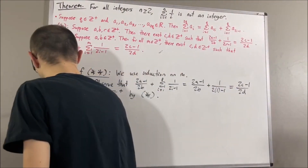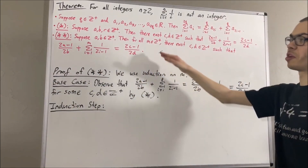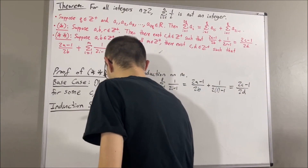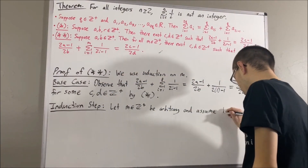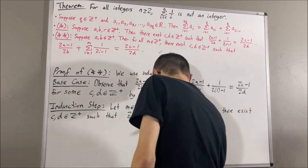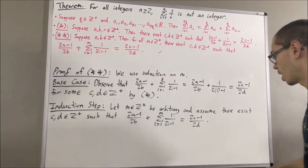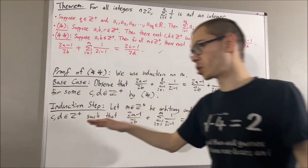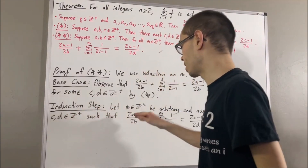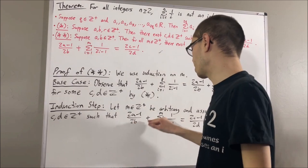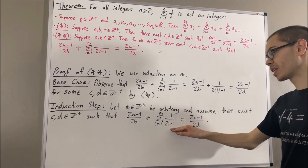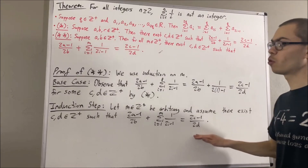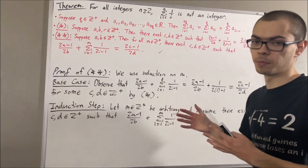Now let's move on to the induction step. We give ourselves an arbitrary positive integer m, and we assume this statement is true for that arbitrary positive integer m. The whole goal of the induction step is to show that this is also true for m plus 1. So we want to show that there exist positive integers c0 and d0 such that (2a − 1)/2^b plus the sum from i equals 1 to m+1 of 1/(2^i − 1) equals (2c0 − 1)/2^d0.